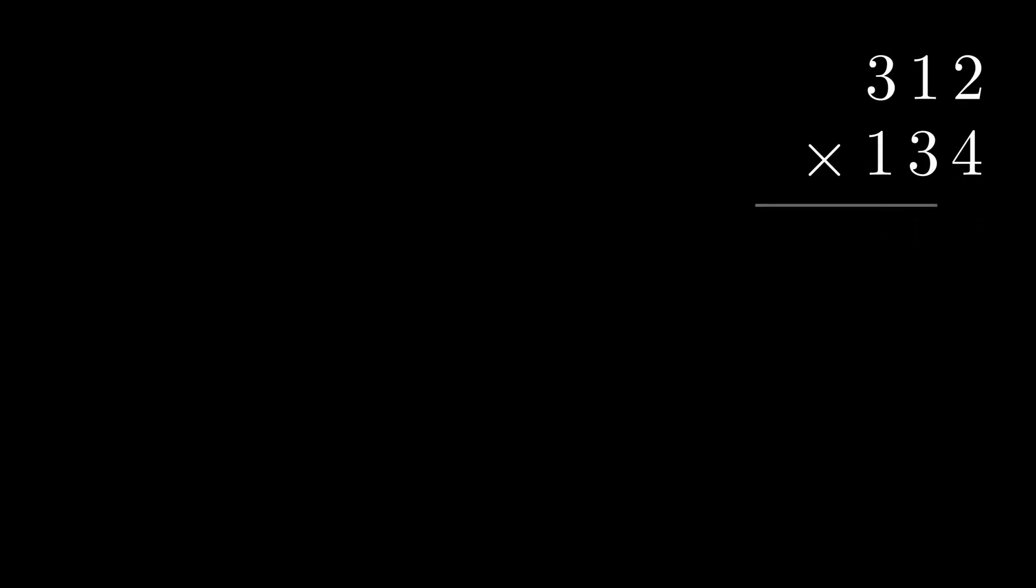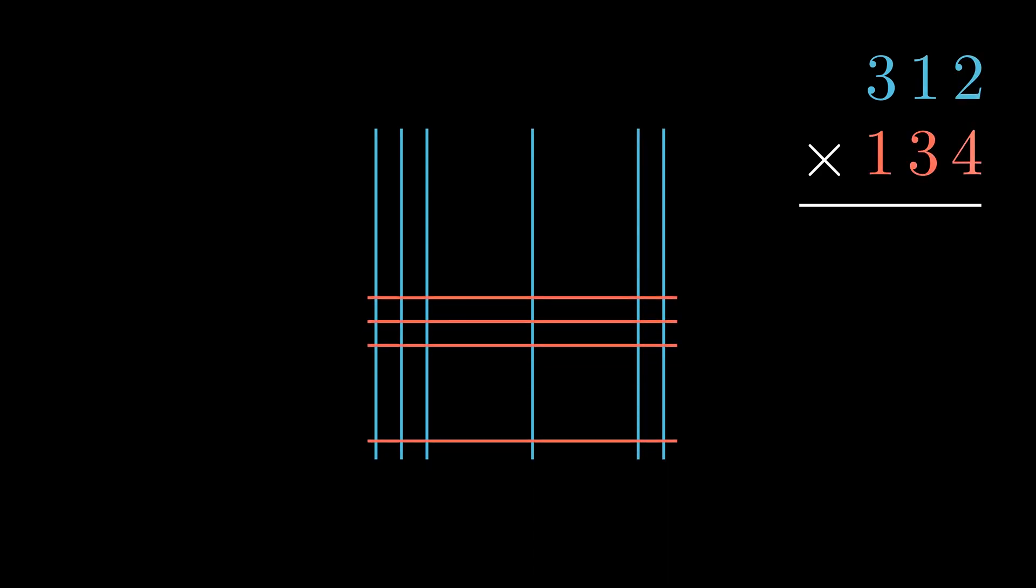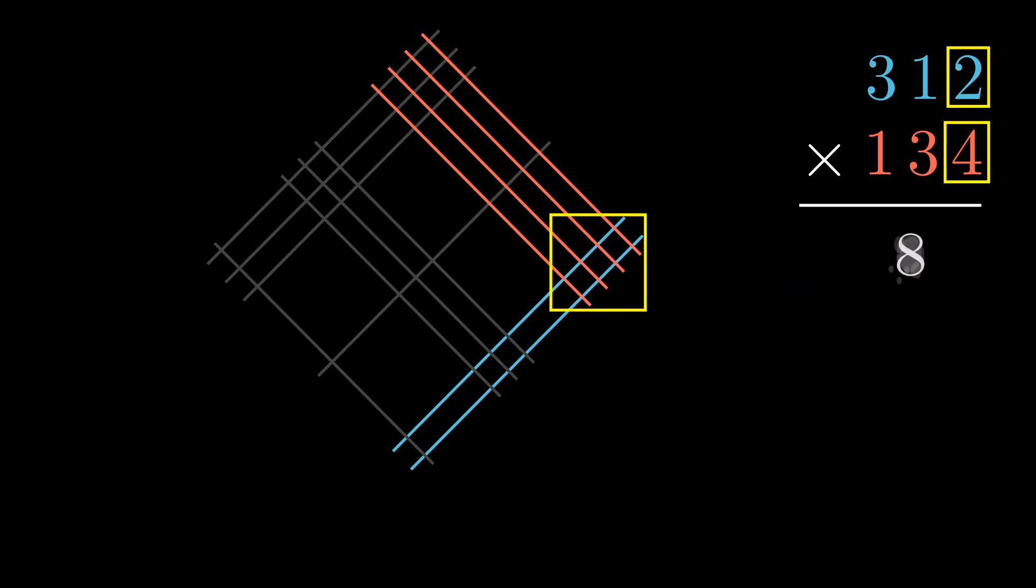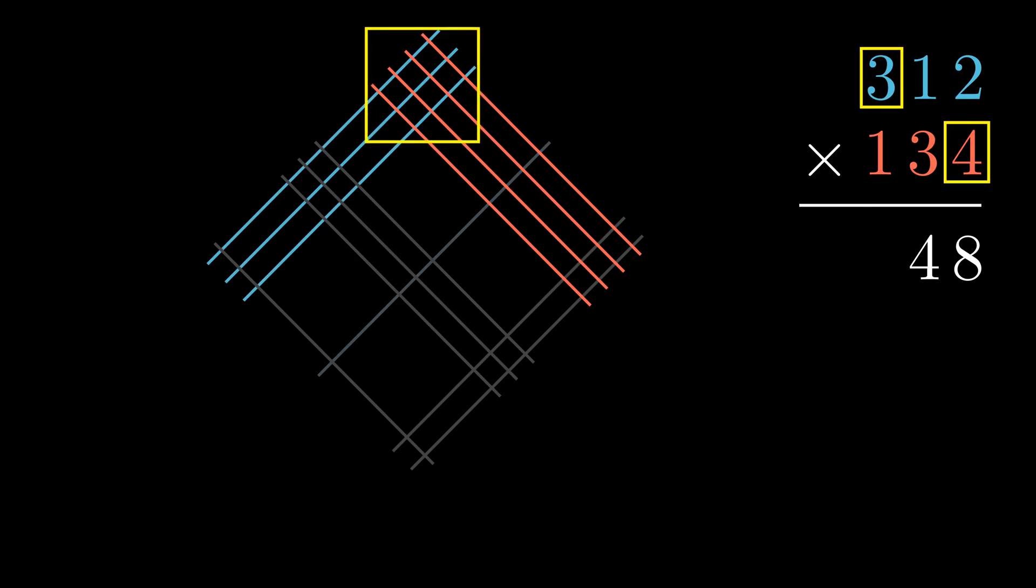Let's see now how our familiar multiplication algorithm compares to the line method we learned, step by step. Starting with 2 times 4, meaning that we focus on this particular area on the grid, we count eight intersection points and we write it in the result. Moving on to the next pair of numbers, 1 times 4 equals 4, and then 3 times 4, which is equal to 12.